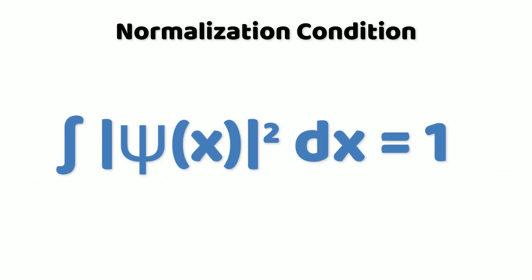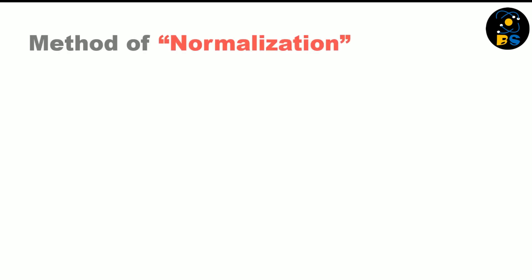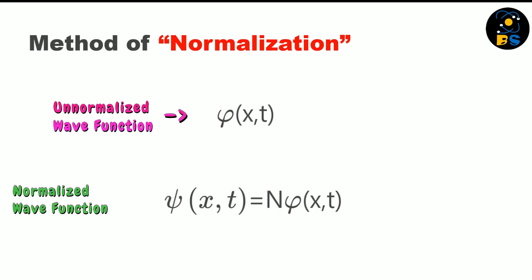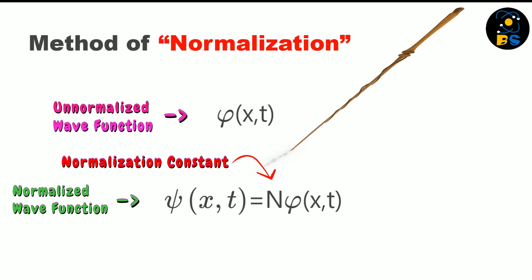Let's begin with our normalization condition. If your wave function is normalized, then it should follow this condition. So for normalizing a wave function, we need only this condition to be satisfied. Now, if you have an unnormalized wave function phi, to construct a normalized wave function we can multiply it with a normalization constant N — this constant is like a magic wand that ensures our wave function follows the rule of normalization.